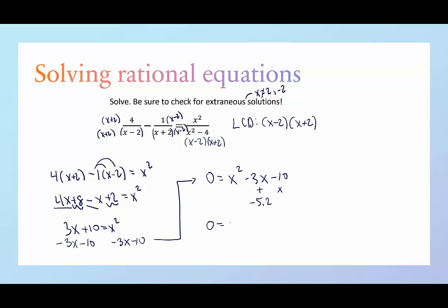I get to just plug those in using my fancy shortcut. This becomes x minus 5 times x plus 2, and now we apply the zero product property. The zero product property says if I have two things that are being multiplied and their product is 0, one of those things is 0. Let's find out.